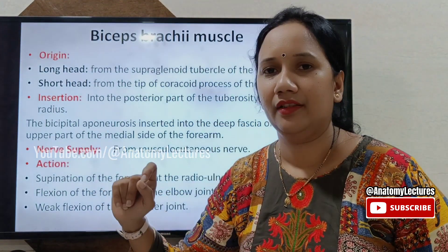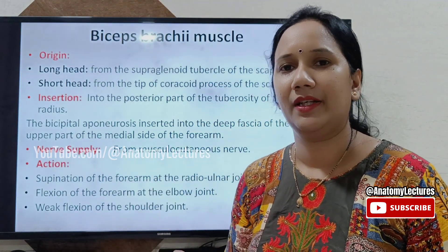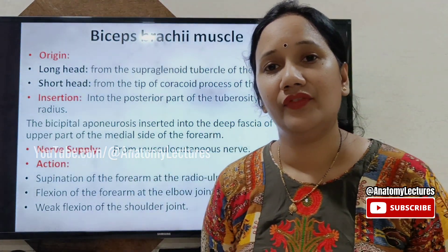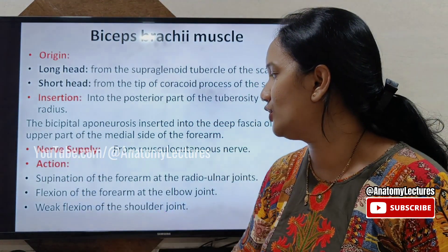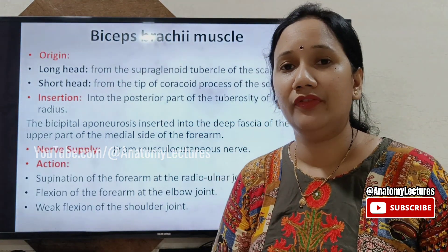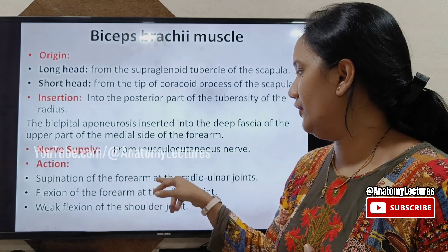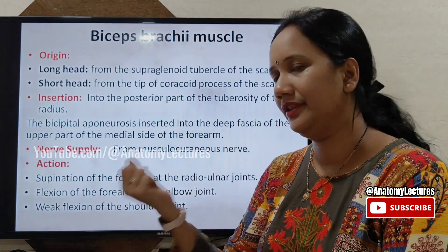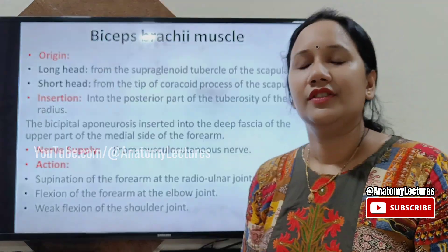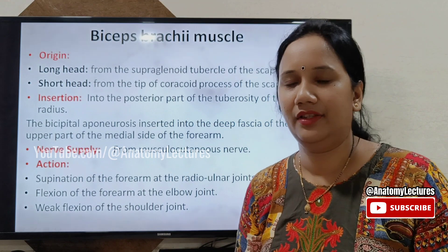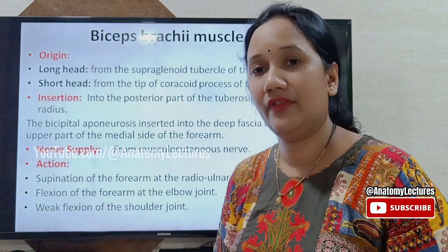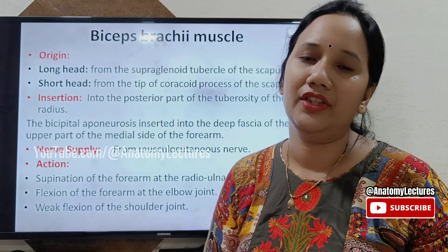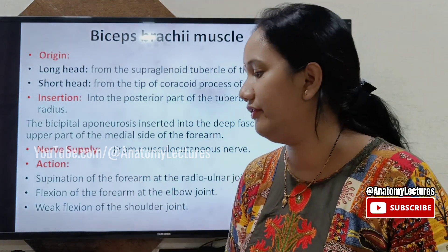The nerve supply of biceps is the musculocutaneous nerve, as with all muscles in this compartment. Action-wise, biceps is a powerful supinator of the forearm at the radioulnar joint. It also helps in flexion of the forearm at the elbow joint, and is a weak flexor of the shoulder joint. So if a question about supinators of the upper limb is asked, don't forget to mention biceps — it is the powerful supinator.